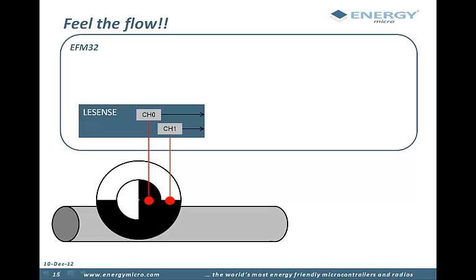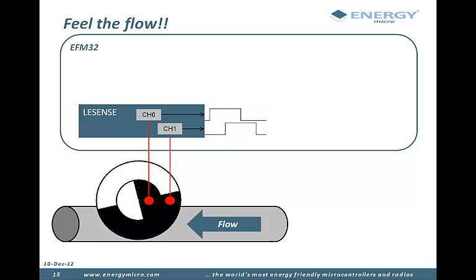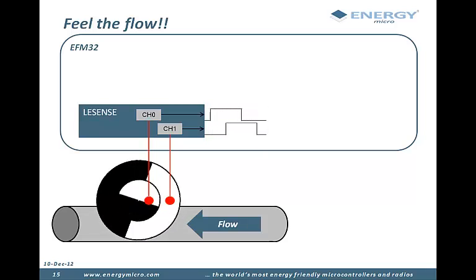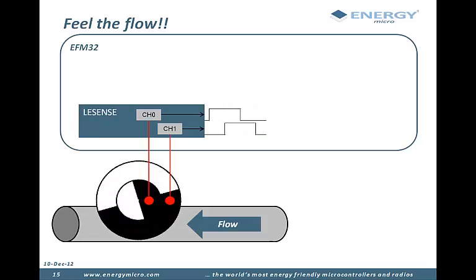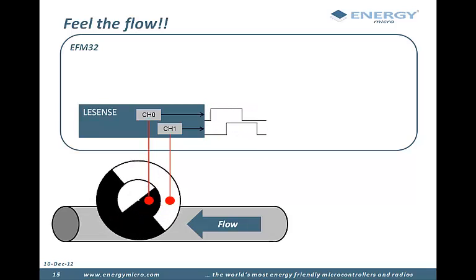Here we see a rotating wheel in a water meter, partly covered with metal. LeSense does the inductive metal measurements at a high sample rate. The measurements end up with a true or false value, depending on if metal is near the two sensor coils.